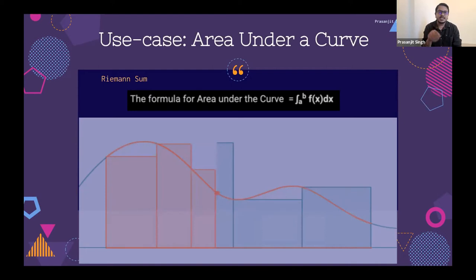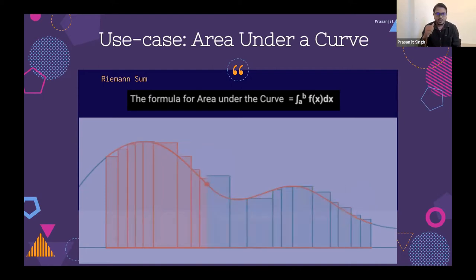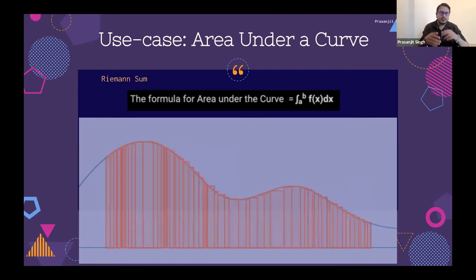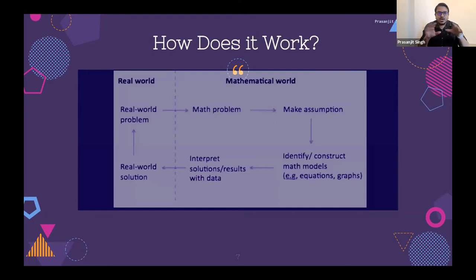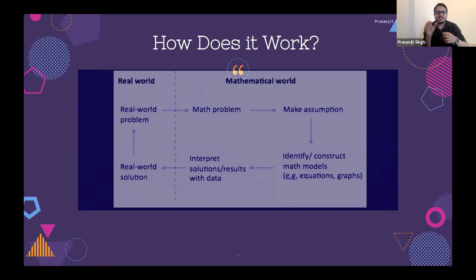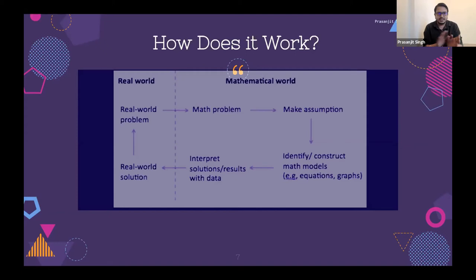That explains how you can convert an equation into a mathematical model. I'll request you to hold this idea — we'll come back to it when we understand how to apply it to technical writing. So how does it work? We have a real-world problem that requires a real-world solution, and this problem cannot be rehearsed — you cannot create a physical replica. So you create a math problem or equation, make some assumptions, construct a mathematical model to explain and work on the problem, get the inferences or solutions, and then apply it to the real world.